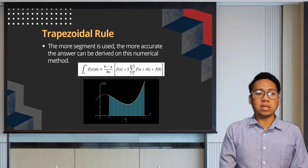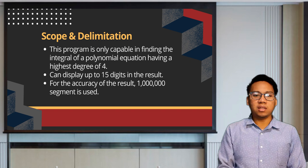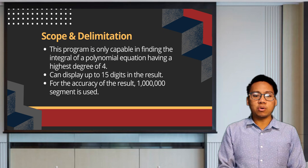To execute the trapezoidal rule, we use C++. This project is called Integral Calculator Using Trapezoidal Rule. This program is only capable of finding the integral of a polynomial equation having a highest degree of 4. It can display up to 50 digits in the result. For accuracy, 1 million segments are used. The percent of error for this method will be shown at the end of the presentation.